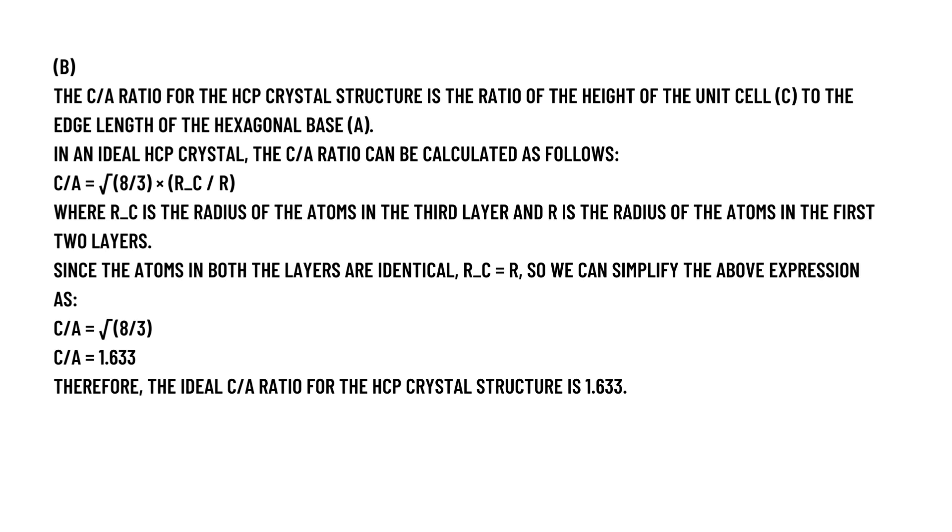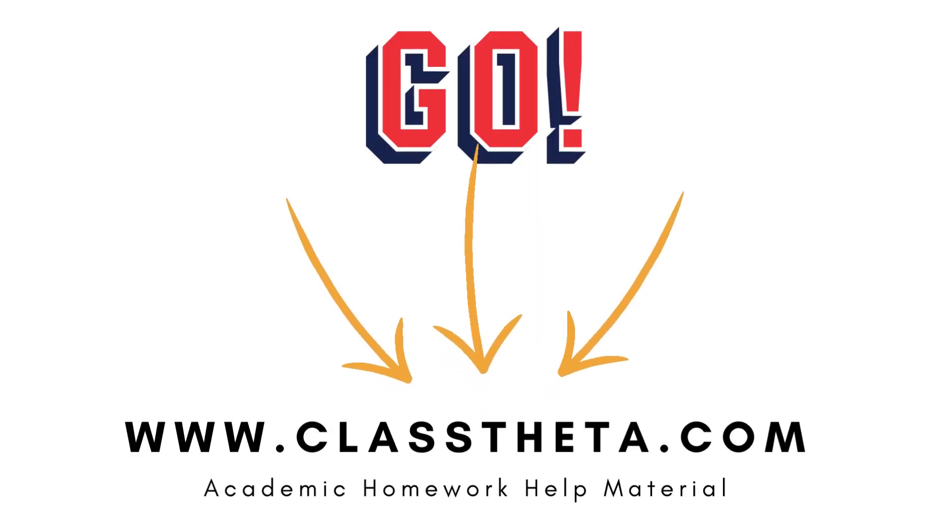The C/A ratio equals the square root of 8/3, and R_C over R where R_C is the radius of the atoms in the third layer and R is the radius of the atoms in the first two layers. This is the correct answer you can check it out. And the ideal structure is 1.633.